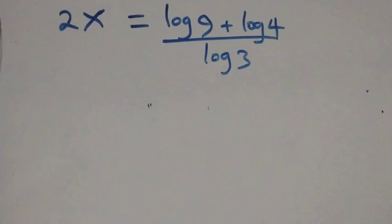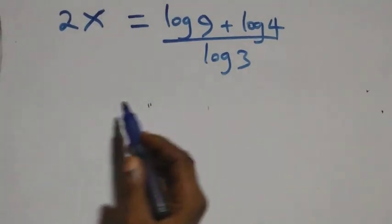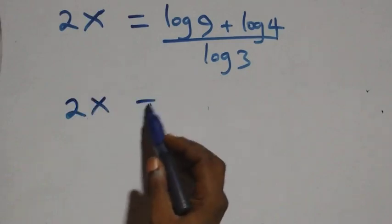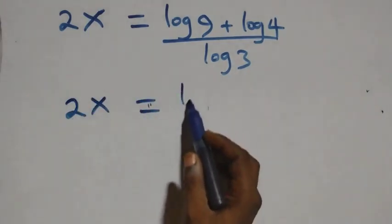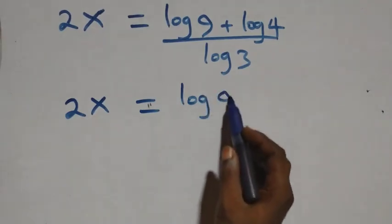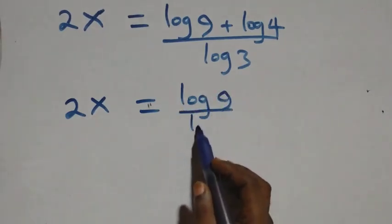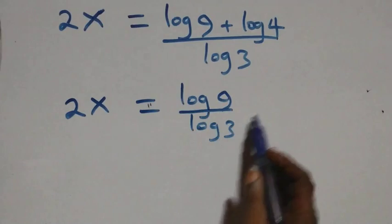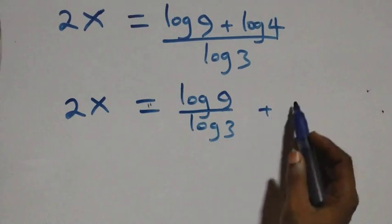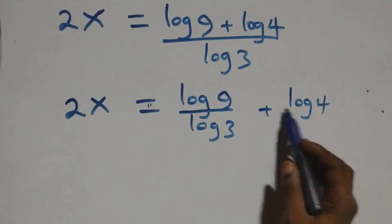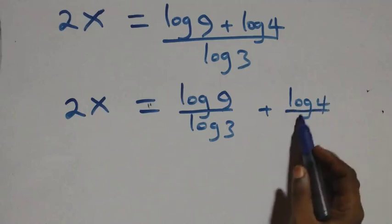That gives us: 2x equals log 9 plus log 4, all over log 3. We then separate this into two fractions: 2x equals log 9 over log 3, plus log 4 over log 3.